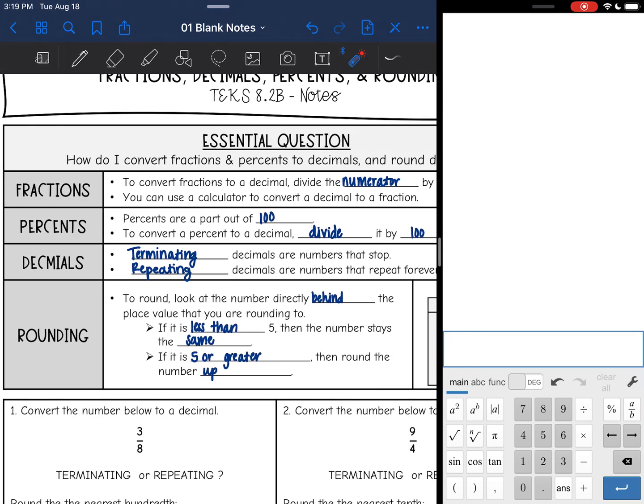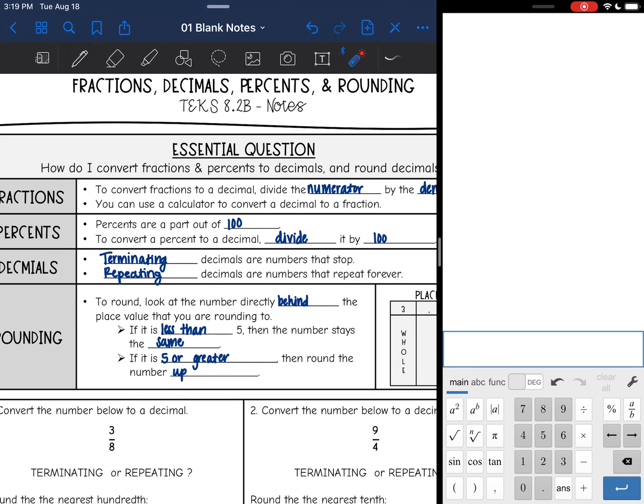Okay, and then once we get our decimal, there's two types of decimals you can get. You can get a terminating decimal, which are numbers that stop. So the decimal stops after a certain point. And then you can also get repeating decimals that repeat forever, and you'll see those, they don't stop.